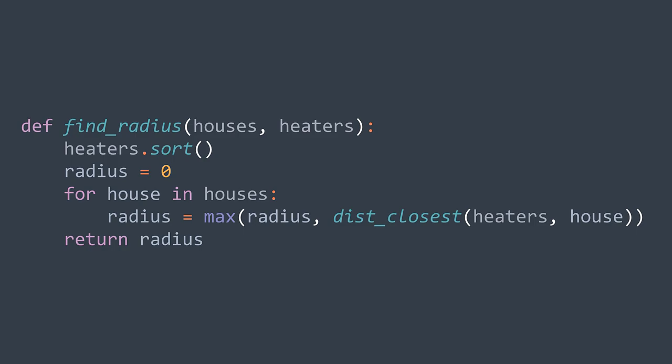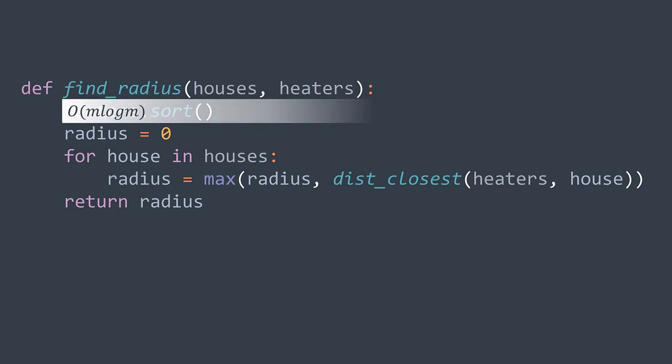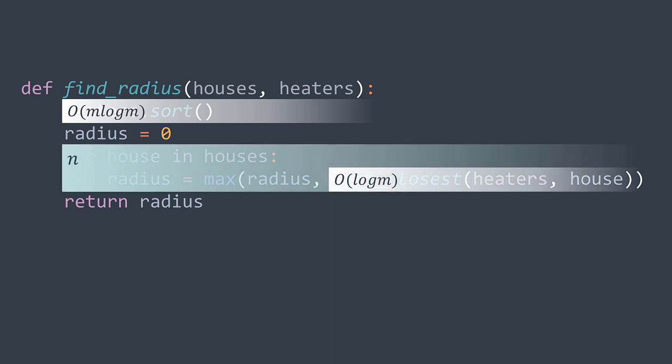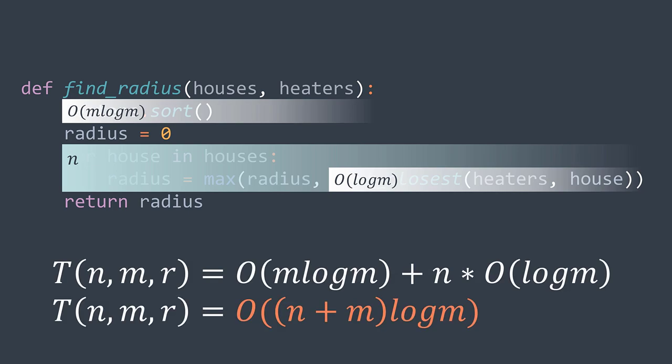For the time complexity, we have O(m log m) to sort the heaters. Then for the loop we traverse n houses while applying binary search on the heaters array costing O(log m). In total we get O(m log m) + n * O(log m) = O(m log m) + O(n log m), which gives O((n + m) log m) time complexity.